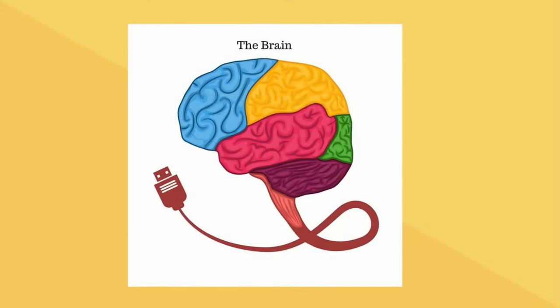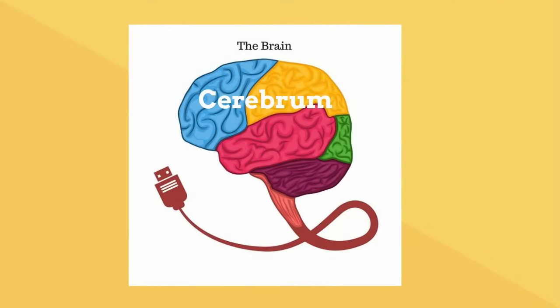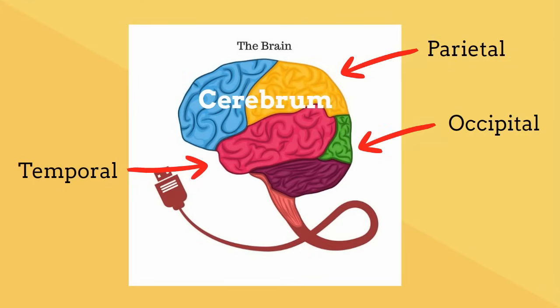The top of the brain is called the cerebrum. It is separated into four lobes: the temporal, the parietal, the occipital, and the frontal.